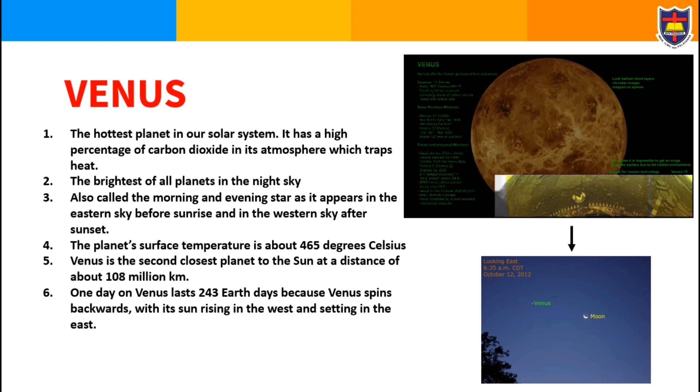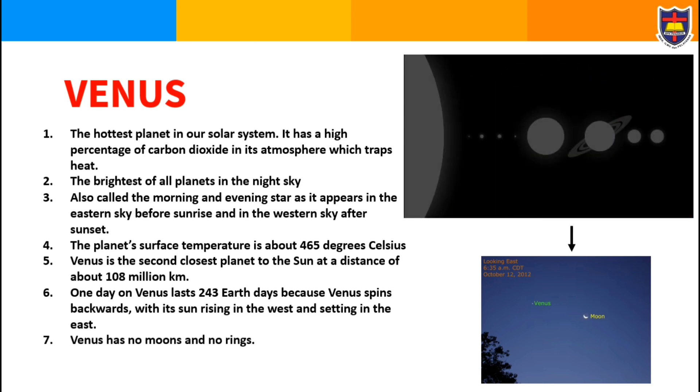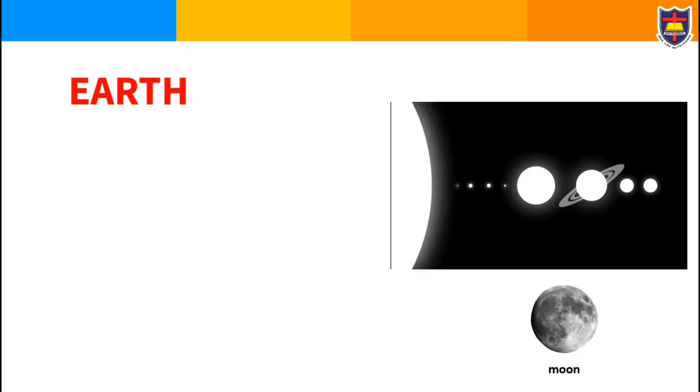Venus has no moons and no rings. Venus is called Earth's twin. The reason for that is they are very similar in size and they are made of similar rocks.